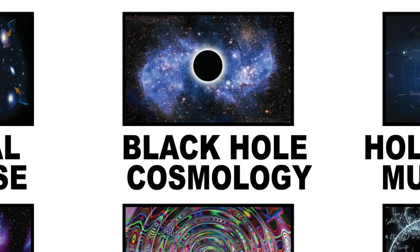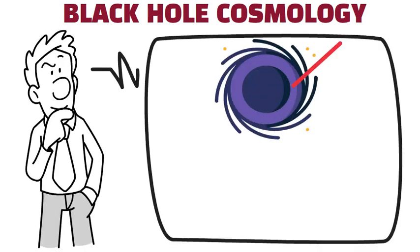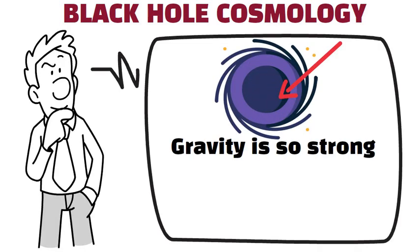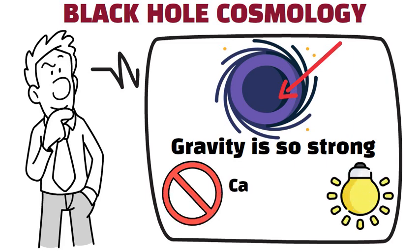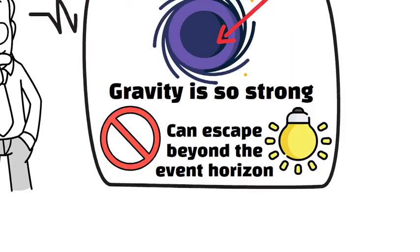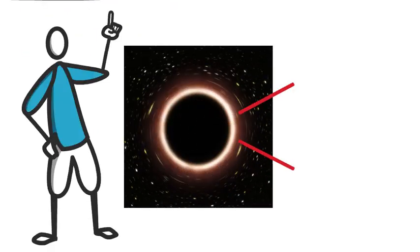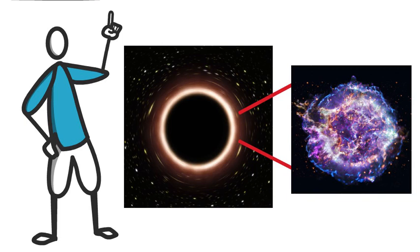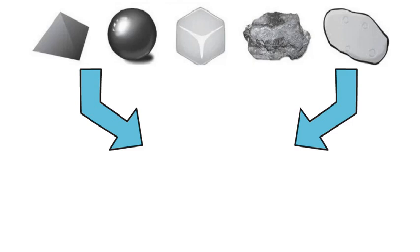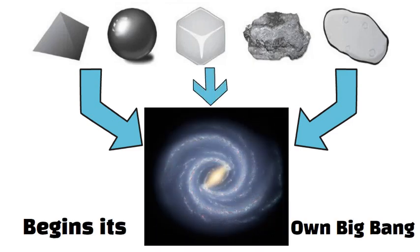Black Hole Cosmology. In standard thinking, a black hole is an extreme region where gravity is so strong that nothing, not even light, can escape beyond the event horizon. Some theoretical physicists suggest that each black hole might spawn a new universe on the other side of that horizon. In effect, matter collapsing in one universe could rebound or bounce into another realm that begins its own Big Bang.